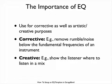EQ is used to alter the frequency response of a recording and plays a fundamental role in shaping and mixing recording tracks. It can be used for corrective as well as creative purposes. For example, we might want to remove low-frequency rumble or noise to clean up a track, or we might want to call the listener's attention to different instruments at different parts in a song. In this lesson, we'll see how to build an EQ template in GarageBand to help us get the most out of EQ.